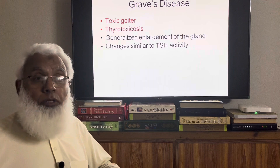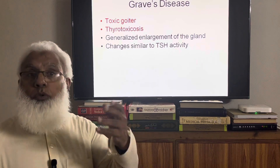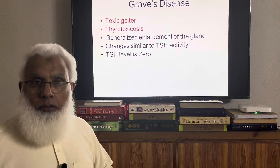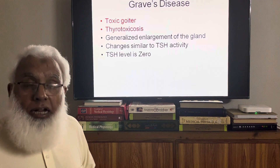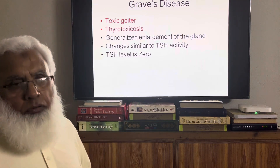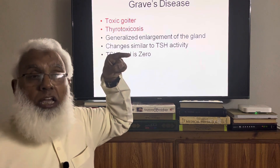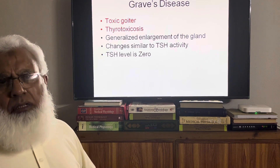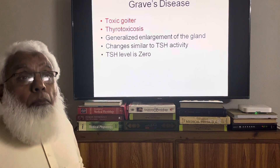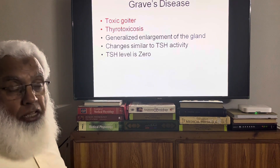The changes are similar to excessive TSH activity, but if we measure the TSH level in Graves' disease it is zero. Because the normal negative feedback mechanism dictates that when T3/T4 concentration is very high, it should suppress both hypothalamic TRH and pituitary TSH — both are suppressed. Yet despite the absence of TSH and TRH, thyroxine is still being produced. Why?